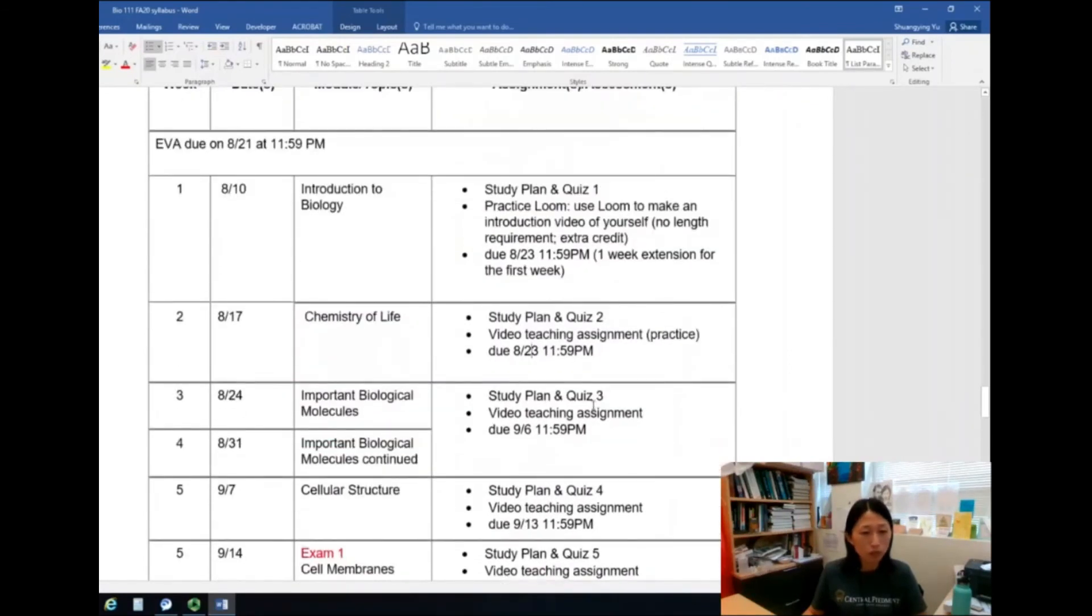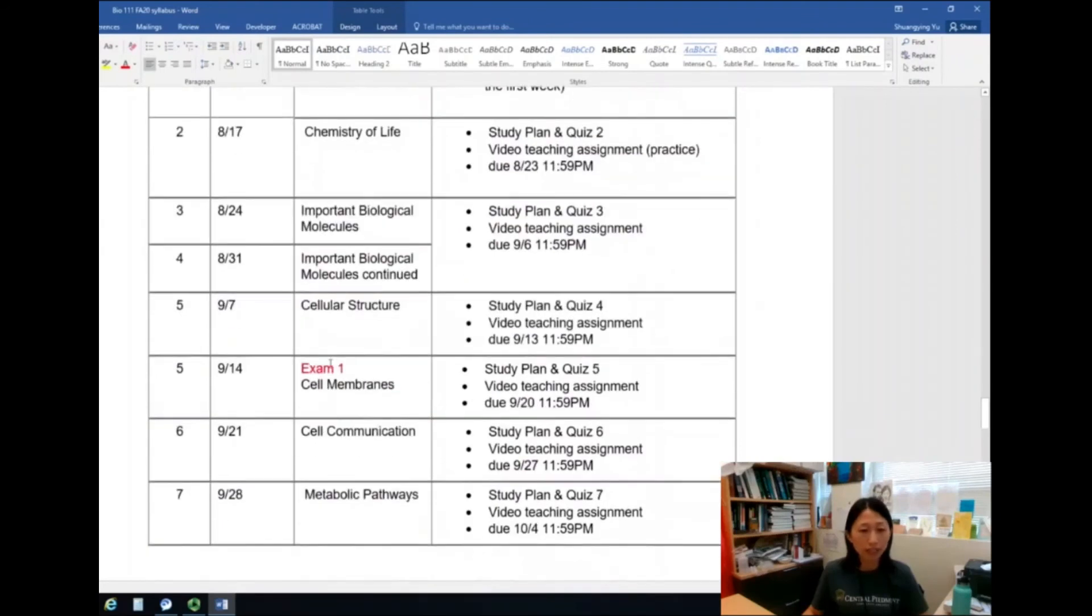Now just real quick for week three and week four, we are just going to go through one chapter, the important biological molecules. Because that chapter is a pretty big chapter. We're going to talk about all the important molecules like carbohydrates, nucleic acids, proteins. So I want to go a little bit slower. So we are going to spend two weeks on that chapter. All the exam dates are highlighted in red.